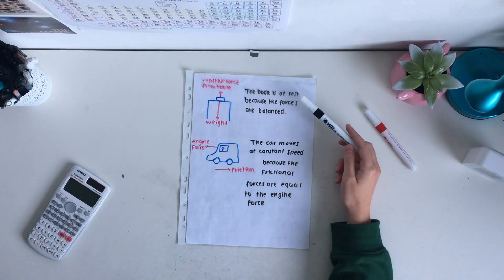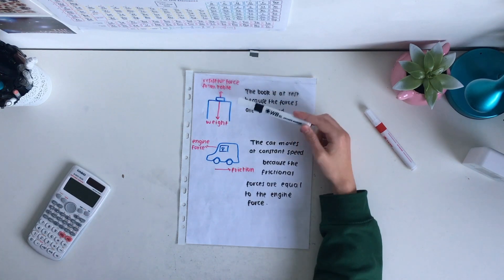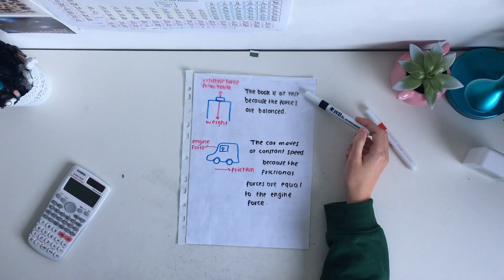Some more examples of Newton's first law and free body diagrams include a book resting on a table. There is a weight acting downwards and a resistive force from the table pushing upwards on the book. The book is at rest because the forces are balanced. There is no external force creating an unbalanced force.